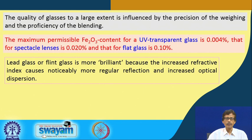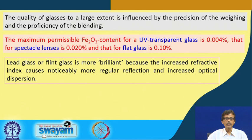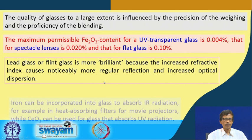Lead glass or flint glass is more brilliant — that is why we consider them as crystal cut glasses. They are very shiny and brilliant because of increased refractive index. This higher refractive index causes more regular reflection, making it very shiny and reflecting light back very nicely. These two optical properties — regular reflection and increased optical dispersion — are achieved through the introduction of lead dioxide into the glass components.